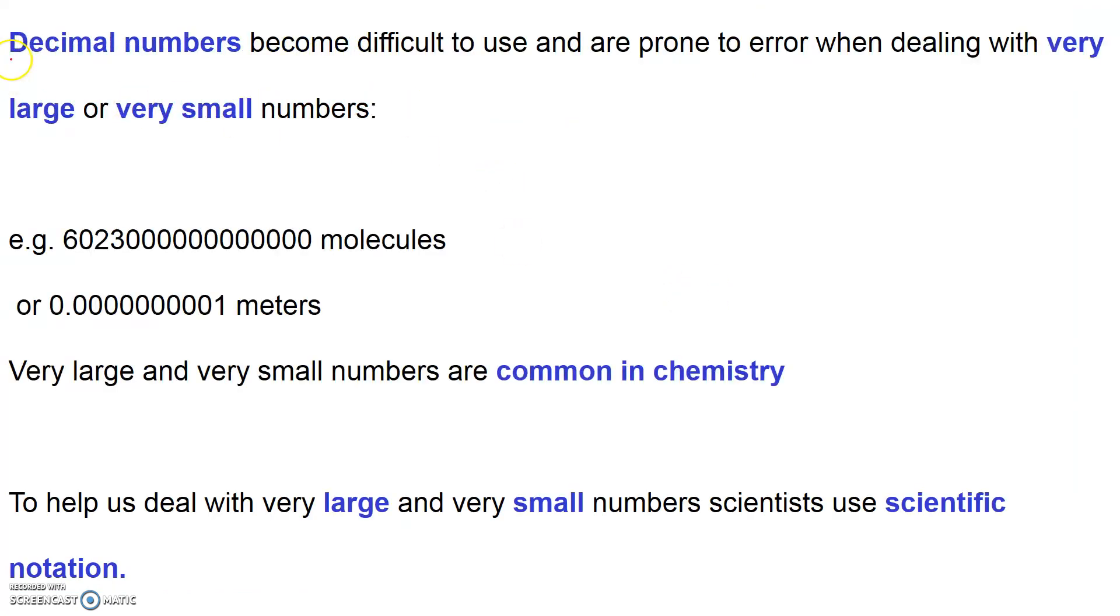So decimal numbers, when they're written in the conventional form, can be really hard to use and can be prone to errors in writing them and reading them when we're dealing with either very large or very small numbers. It's very common in chemistry to be dealing with large numbers, for example the number of molecules or atoms in a sample of matter. Alternatively, we might often deal with some very, very small numbers like, for example, the radius of an atom. So to help prevent us making errors and just to keep it easy for us entering numbers into our calculator and writing numbers down on the page, we've come up with a system called scientific notation.